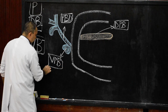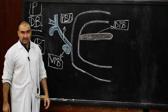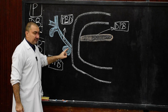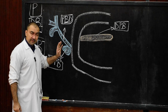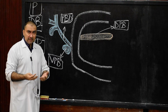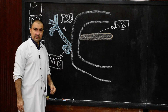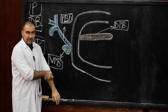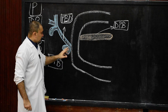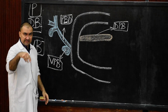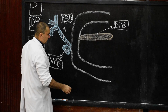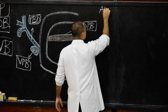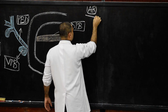The ventral pancreatic bud is initially bi-lobed; these two lobes will later condense and form one lobe. The dorsal pancreatic bud lies at a slightly higher level than the ventral pancreatic bud. Now in the second stage of development, there will be axial rotation of the duodenum, as we discussed during the development of the duodenum.